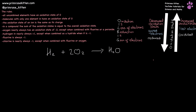To work out if an equation is a redox reaction or a disproportionation reaction, the first thing we need to do is to work out the oxidation state of everything. So, hydrogen here is just combined with hydrogen so that is going to be zero. Oxygen here is just combined with oxygen so that again is zero. Oxygen over here is going to have minus two and hydrogen here is going to be plus one, and there are two of them so overall contributing plus two.